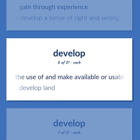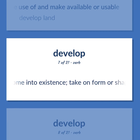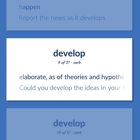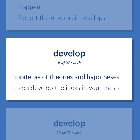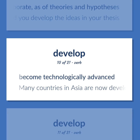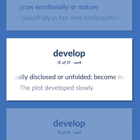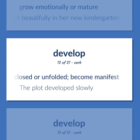Change the use of and make available or usable. Develop land. Come into existence; take on form or shape. Happen. Report the news as it develops. Elaborate, as of theories and hypotheses. Could you develop the ideas in your thesis? Become technologically advanced — many countries in Asia are now developing at a very fast pace. Grow emotionally or mature — the child developed beautifully in her new kindergarten. Be gradually disclosed or unfolded; become manifest — the plot developed slowly.